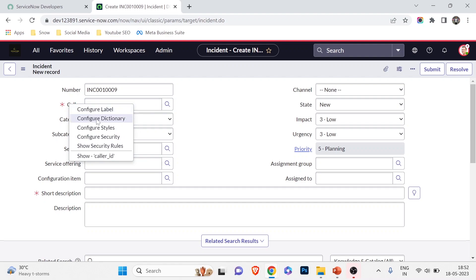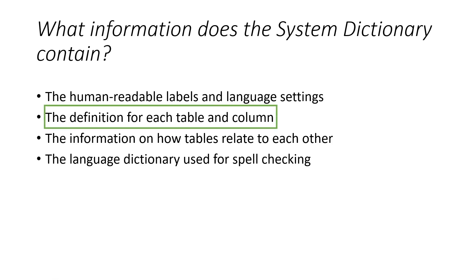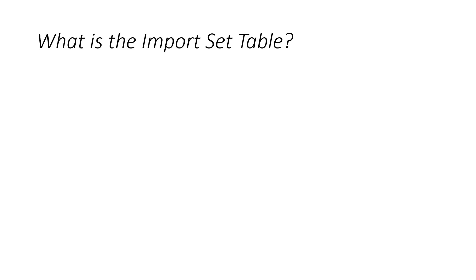The question is: what information can we get from the configure dictionary? Option A — human readable labels and language settings — no, there are no language settings. Option B — the definition for each table and column — yes, that's what we get. Option C — how tables relate to each other — no. Option D — language dictionary used for spell checking — absolutely not. The right answer is the definition for each table and column.